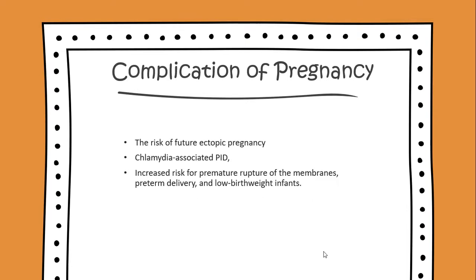Complications of pregnancy include the risk of future ectopic pregnancies, chlamydia-associated PID, increased risk for premature rupture of the membranes, preterm delivery, and low birth weight infants.